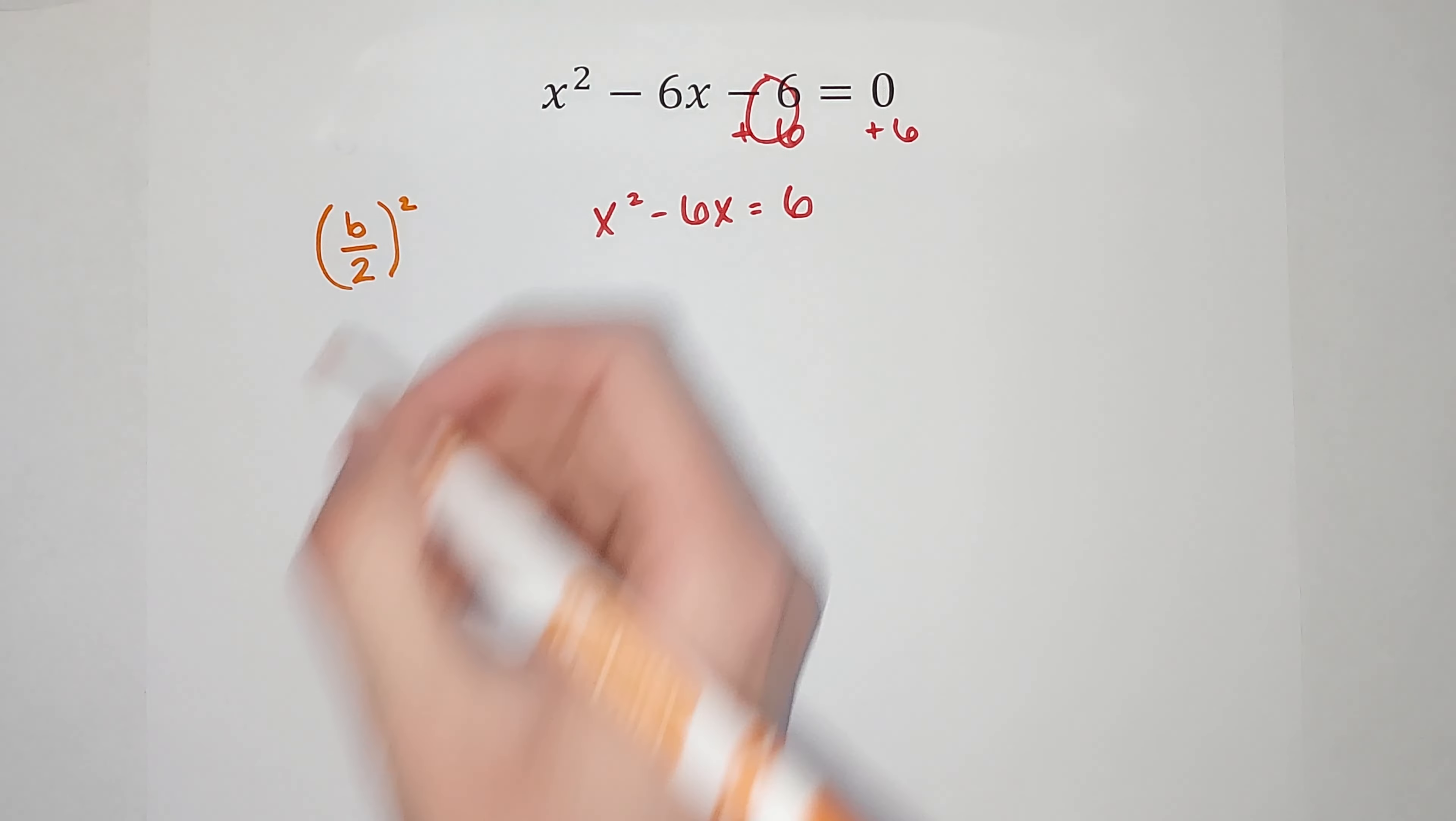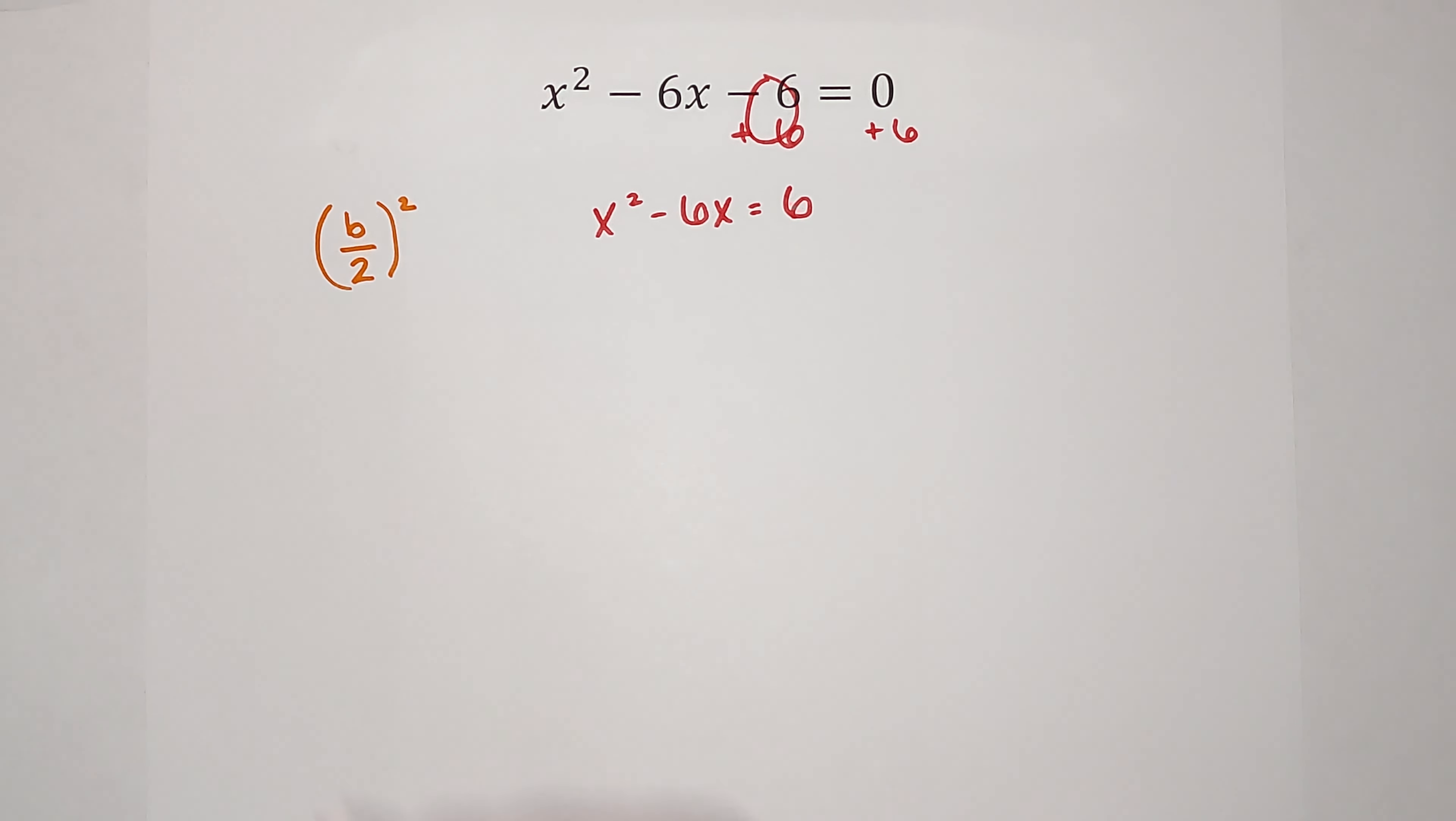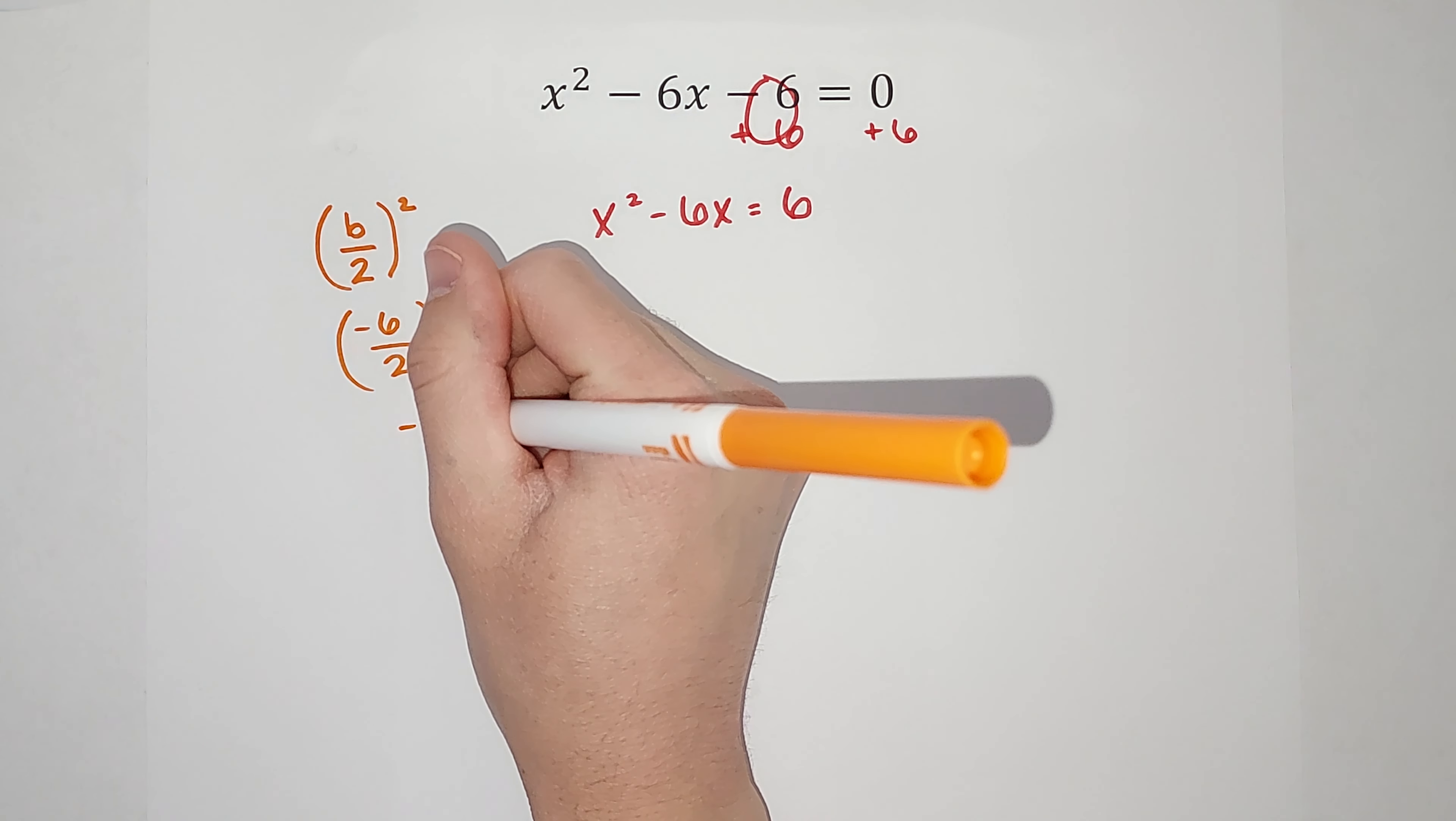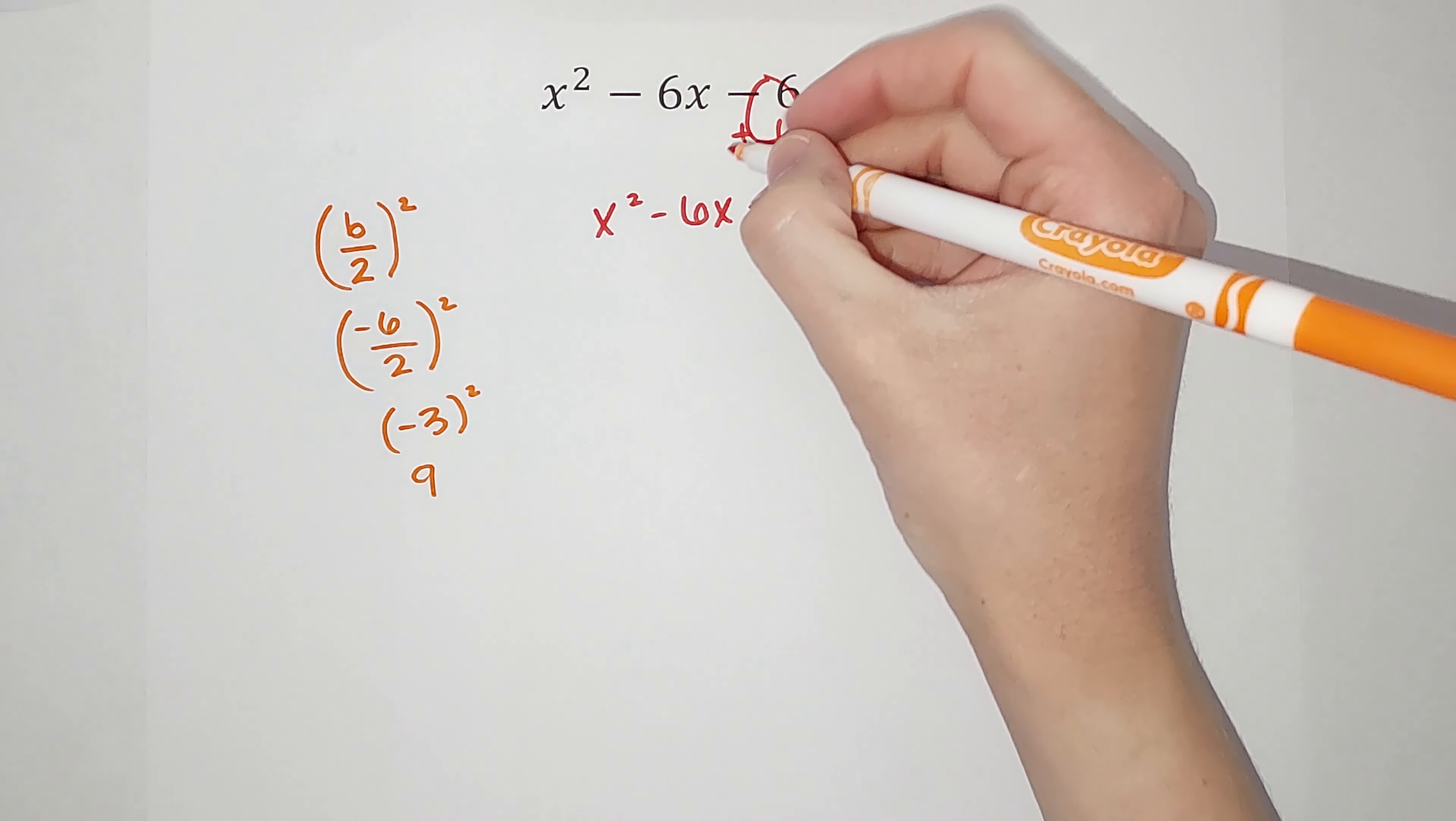Now you're like, I do not see a b anywhere on your paper, lady. This is where b comes from. When we have a quadratic equation, b is the one in front of the x. So in this case, it's negative 6. So I'm going to have negative 6 over 2 and square that. Negative 6 divided by 2 gives me a negative 3. We are squaring that. Negative 3 times negative 3 gives me 9.